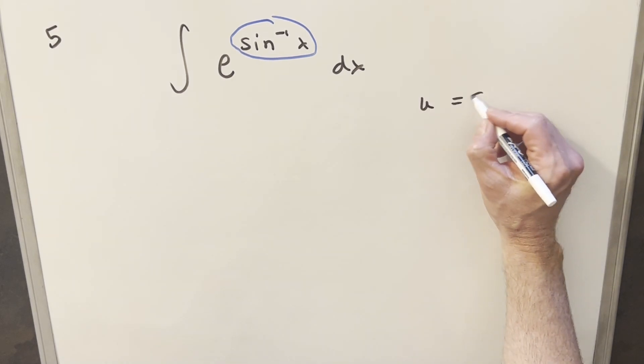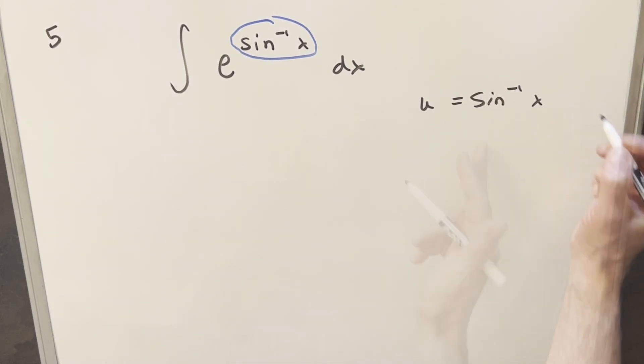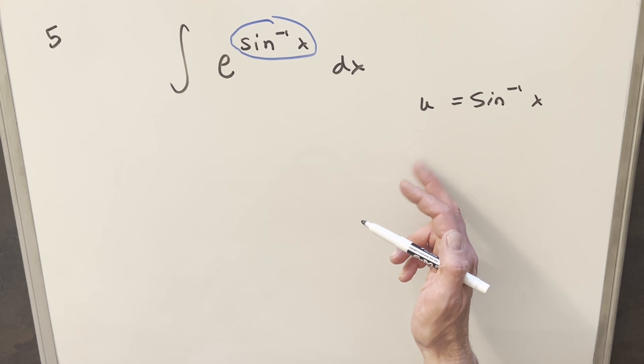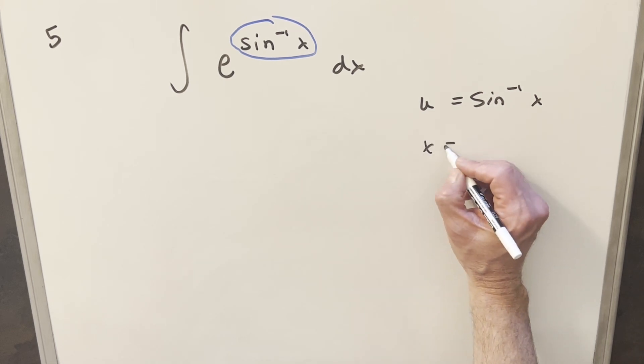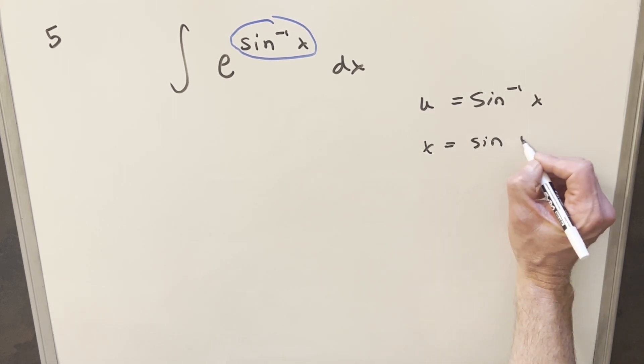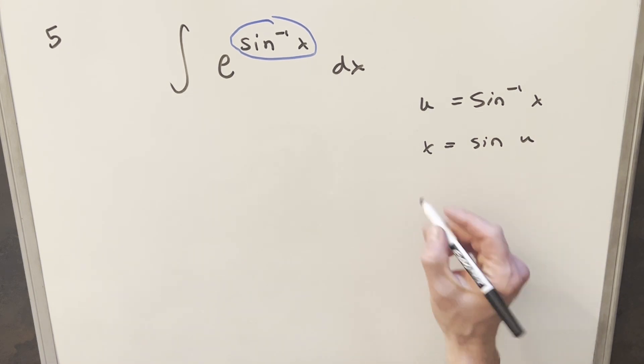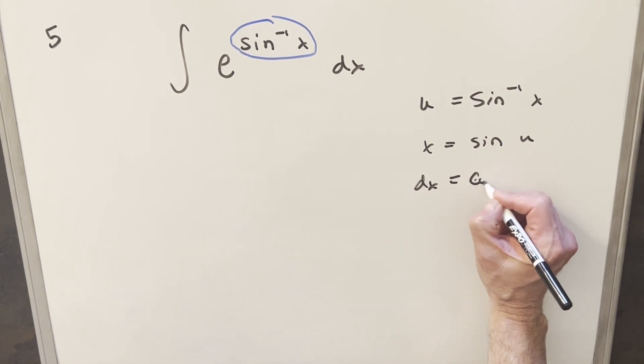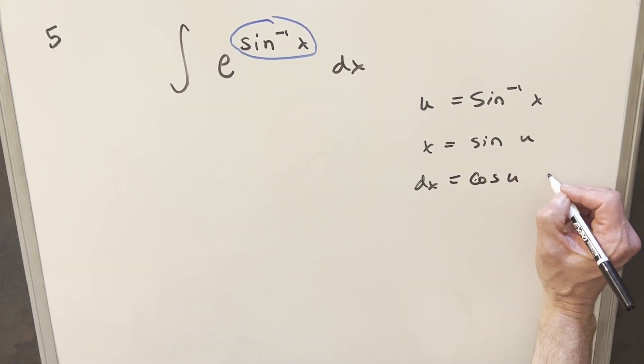So we'll say u equals arcsin of x. And so in this case, to make the derivative a little easier, let's just solve for x by rearranging this so we can have x equal to just sin of u. I'll take a derivative, so we have here dx is going to be just cosine of u, du.